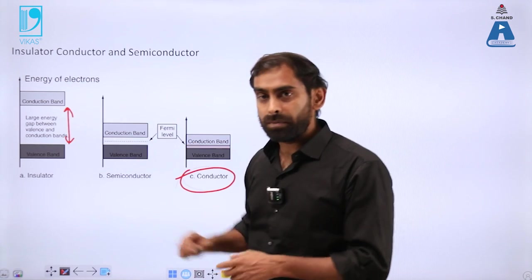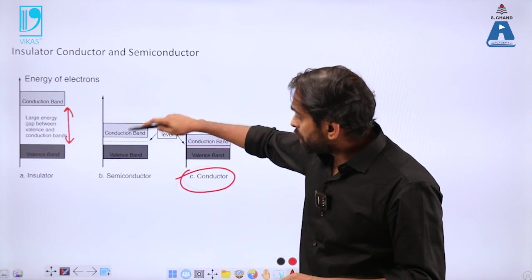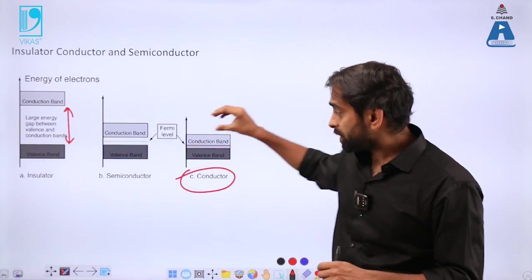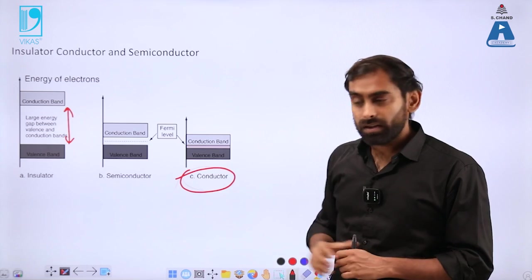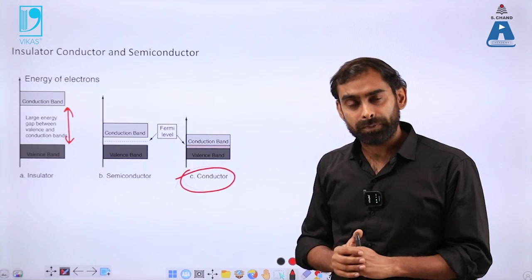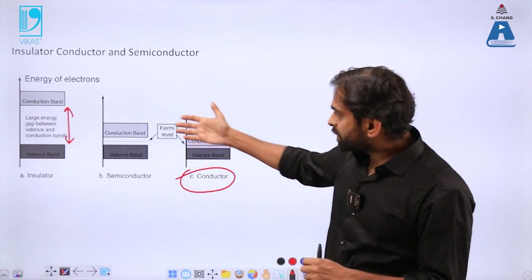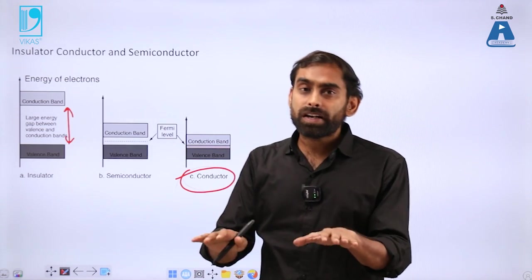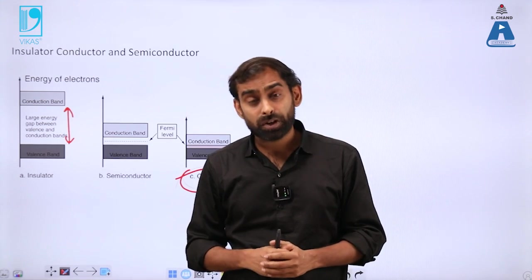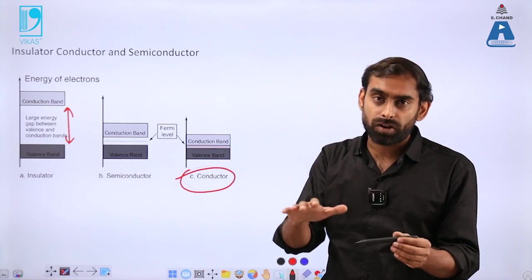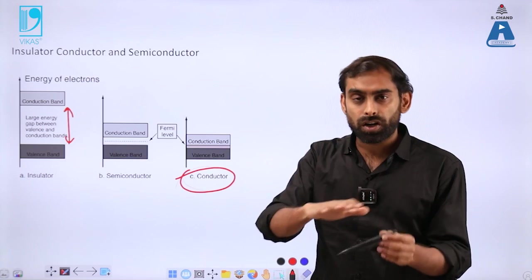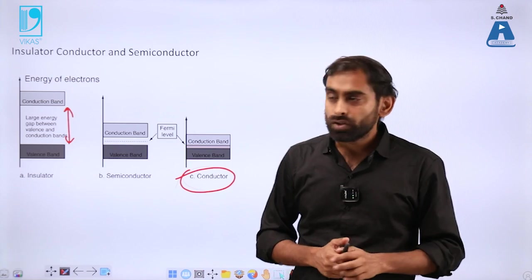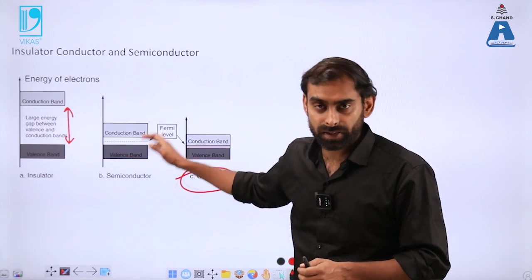There are certain materials which do not have a very large gap like insulators, neither do they have overlapping valence band and conduction band. Since they don't have overlapping bands, normally they will not conduct electricity because there is no free electron in their crystal or lattice capable of conducting current. They behave as bad conductors.